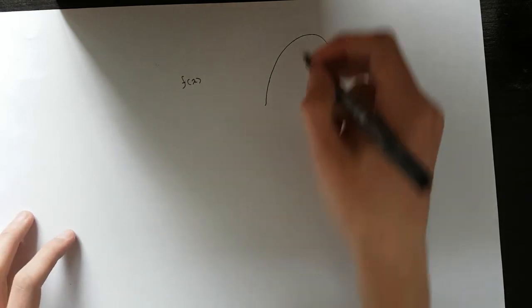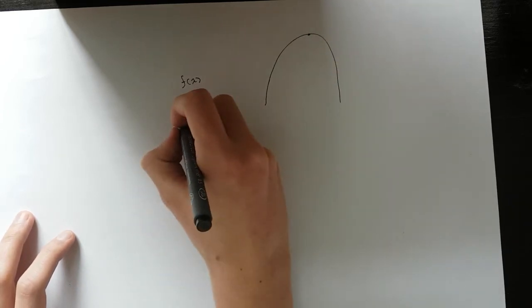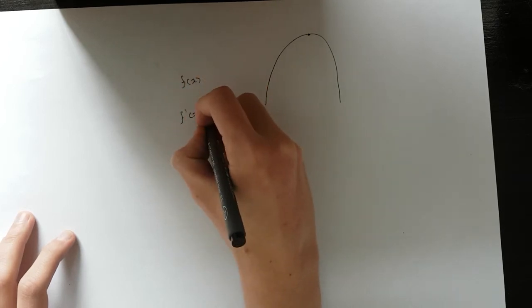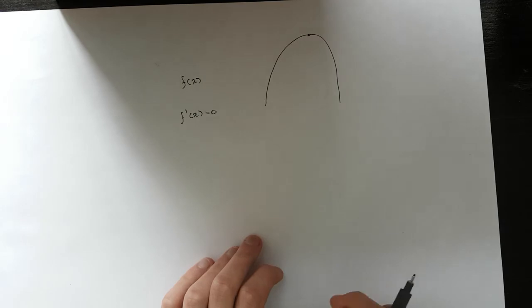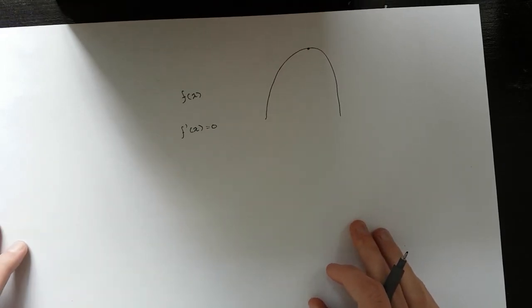So if you want to find a point where the slope is 0, all you do is find the derivative, set that equal to 0, solve for X, and then you've found the X value where the slope of the function is 0.